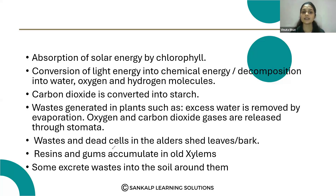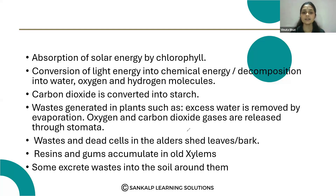Waste and dead cells in plants are removed through old leaves. Resins and gums accumulate in old xylem. Also, some plants excrete waste into the soil around them. So the methods include: removal of excess water by evaporation, gas exchange through stomata, waste removal via old leaves, resins and gums in old xylem, and excretion into the soil.